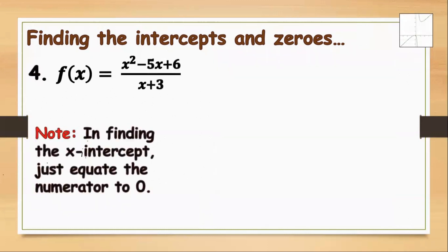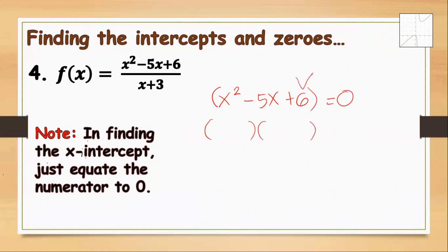Let's continue with another example: f(x) equals x squared minus 5x plus 6 all over x plus 3. Let's find the x-intercept. We have x squared minus 5x plus 6 equals 0. We look for factors of 6 that when added equal negative 5 — that's negative 3 and negative 2, since negative 3 plus negative 2 is negative 5, and negative 3 times negative 2 is positive 6.